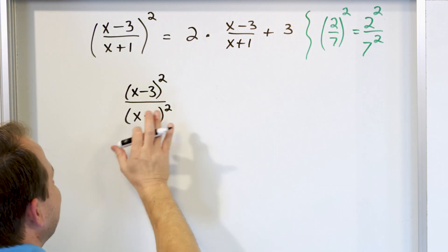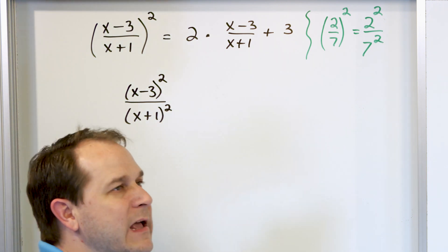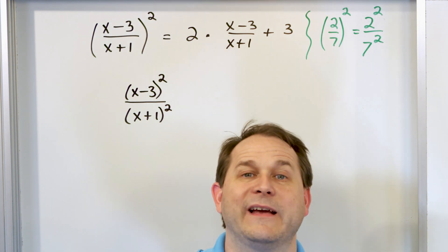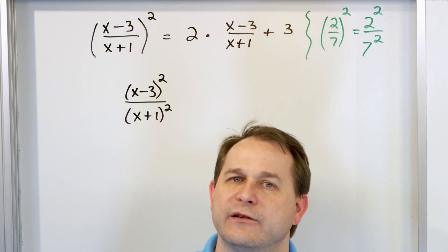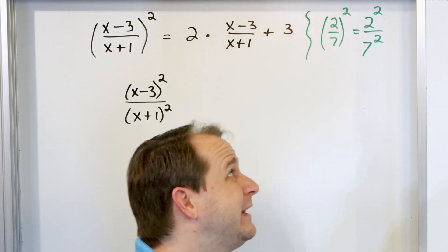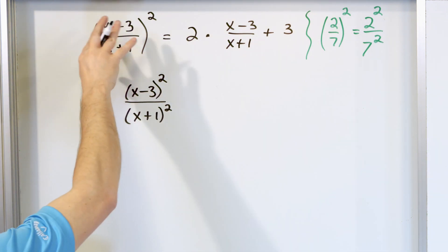Now this is not so different than what we've seen before, because (x+1) squared is just (x+1) times (x+1). So see, now it doesn't look different than the types of denominators we've seen in all the other problems, but it looks different to begin with, with everything wrapped up.